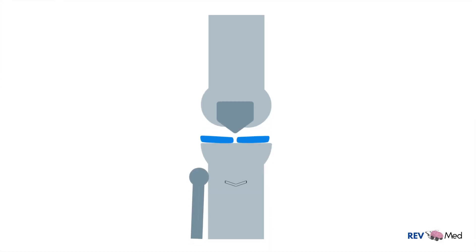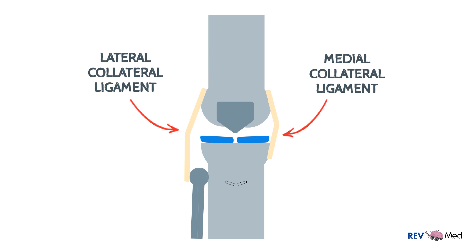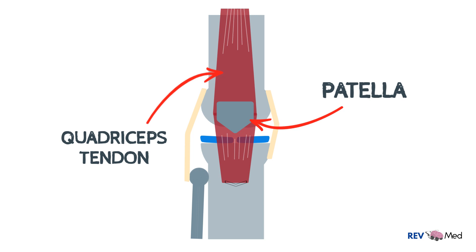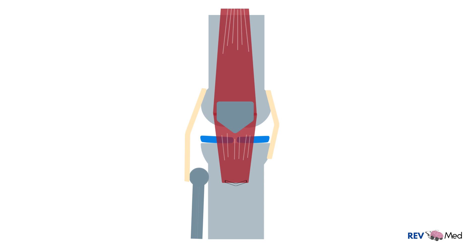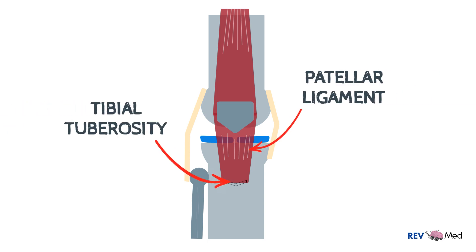The knee joint is further stabilized by ligaments: the lateral collateral ligament and the medial collateral ligament. Next let's draw in the quadriceps tendon which is attached and overlies the patella bone and forms the patellar ligament. The patellar ligament runs and attaches to the tibial tuberosity, which gets inflamed and has microavulsions — key to noticing Osgood-Schlatter disease.